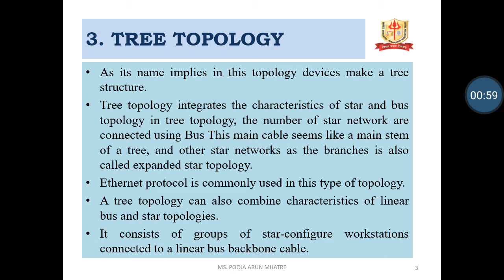The tree topology is integrated with the characteristics of star and bus, so the number of star networks are connected using bus topology. The stem is like a tree and the branches are a combination of star and bus topology. Tree topology is a special type of structure in which many connected elements are arranged like branches of a tree. Ethernet protocol is commonly used in this type of topology. A tree topology can also combine the characteristics of linear bus and star topologies, consisting of groups of star configured workstations connected to a linear bus backbone cable.